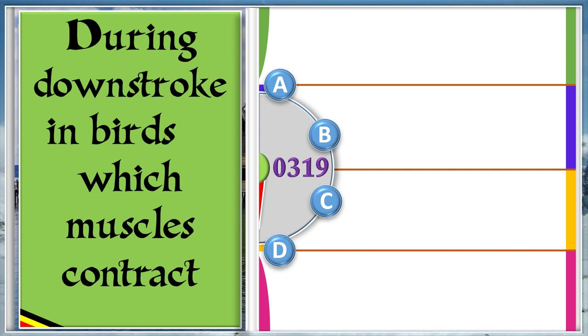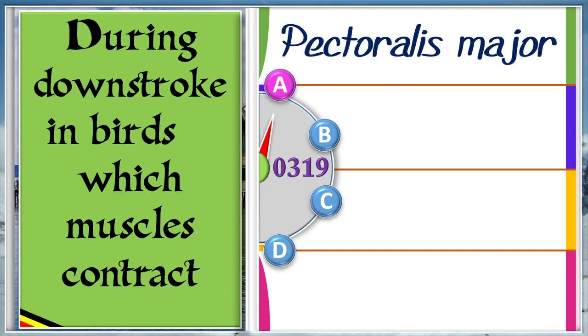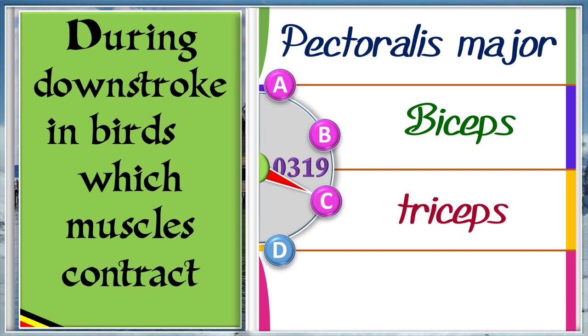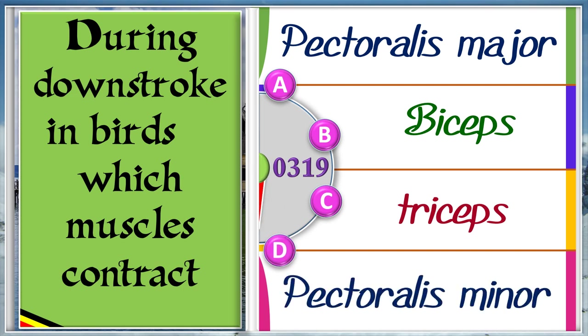During downstroke in birds, which muscles contract? A: Pectoralis major. B: Biceps. C: Triceps. D: Pectoralis minor. And the answer is A, pectoralis major.